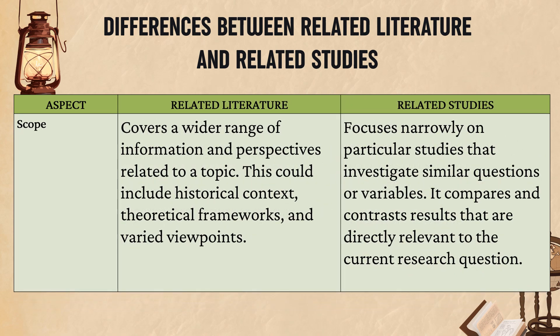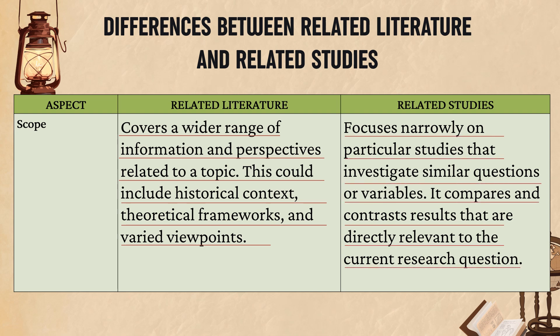By scope, related literature covers a wider range of information and perspectives related to a topic, including historical context, theoretical frameworks, and varied viewpoints, helping you understand your topic better. While related studies focus narrowly on particular studies that investigate similar questions or variables, comparing and contrasting results directly relevant to the current research question — helping you see what worked and what didn't.